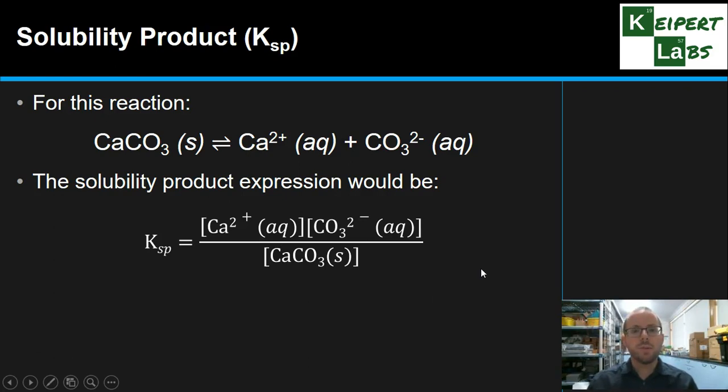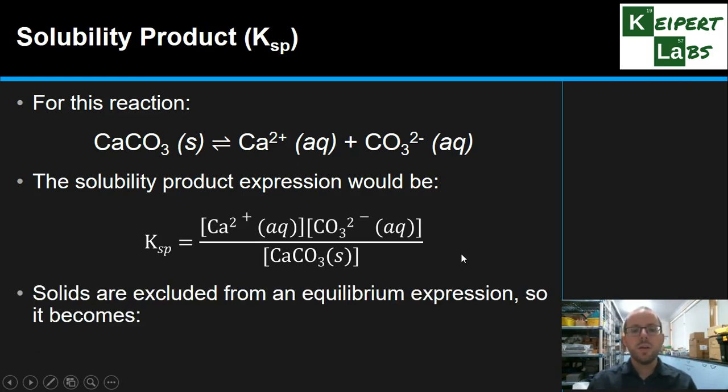However, one of the things we've talked about is this idea that we exclude solids from an equilibrium expression. Because effectively, their concentration, the amount of solid, is not changing. We're swapping some out, so it would effectively be one. So we ignore it in the expression. Our K expression, Ksp, looks like this. Our calcium concentration times our carbonate concentration. We looked at our equation, just talking about the ions with their coefficients, which are one in this case.